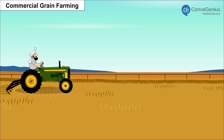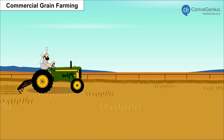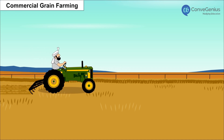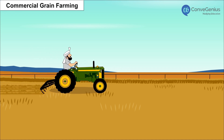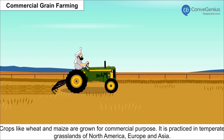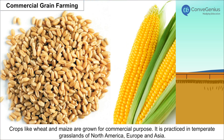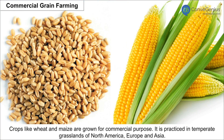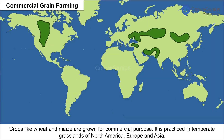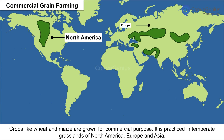In Commercial Grain Farming, crops like wheat and maize are grown for commercial purposes. It is practiced in the temperate grasslands of North America, Europe and Asia.